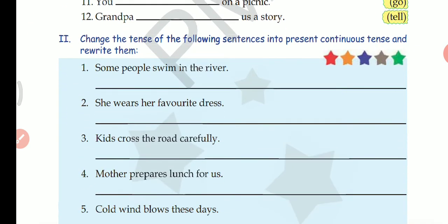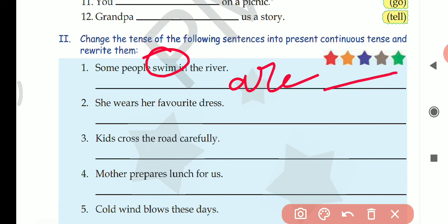Next. Change the tense of the following sentences into present continuous tense and rewrite them. Here you have some sentences given. You have to change the tense into present continuous and rewrite the sentences. First one: Some people swim in the river. What is the verb? Swim is the verb. Swim will change into swimming. And some people means plural, so with plural we use 'are'. So some people are swimming in the river. Second: She wears her favorite dress. She is singular. She is wearing her favorite dress.